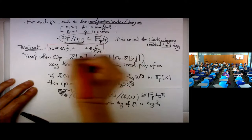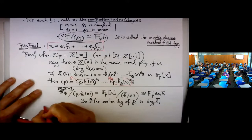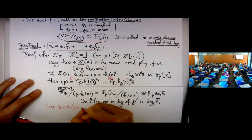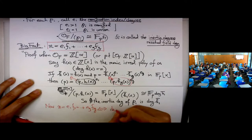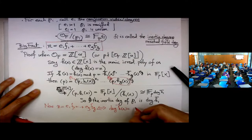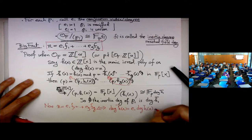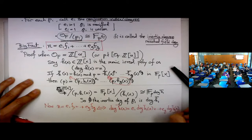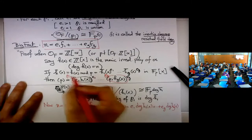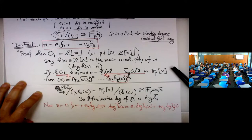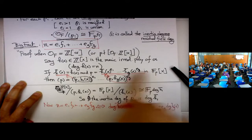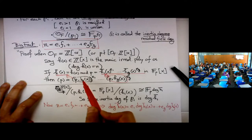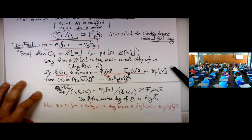And now you see that the big fact N = Σ Ei·Fi is basically just saying that the degree of H bar equals E1·deg(H1 bar) + E2·deg(H2 bar) + ... When you factor a polynomial, the degrees add up. The degree of each factor is precisely the inertia degree of each prime above P. Therefore N = E1·F1 + · · · + Eg·Fg.